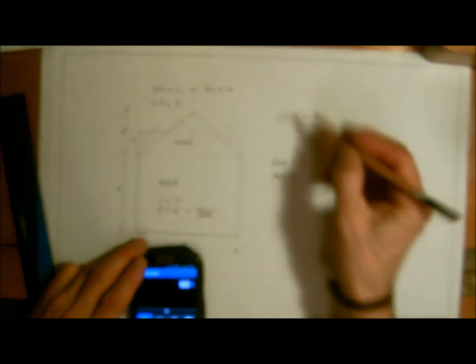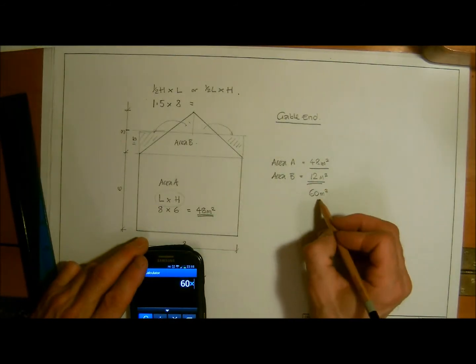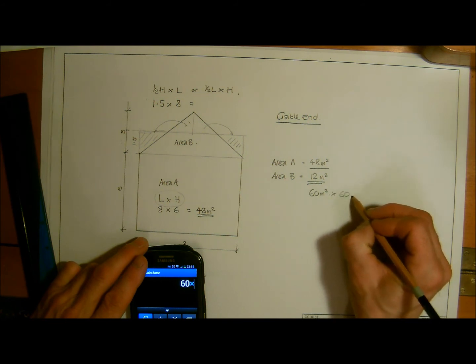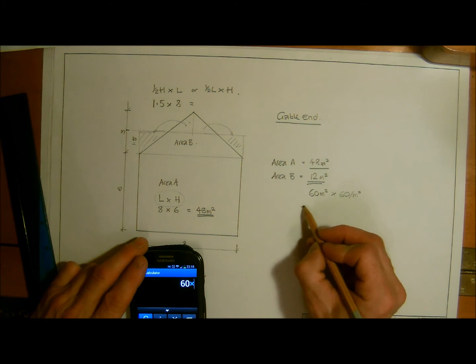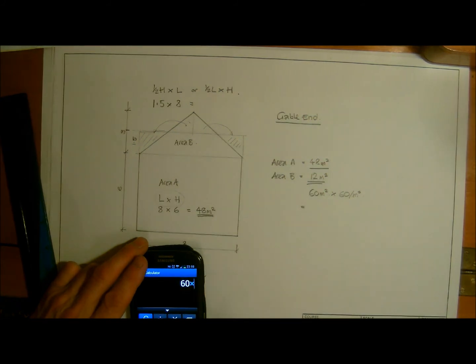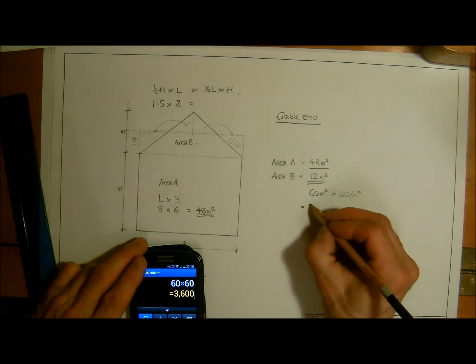Multiplied by stretcher bond we said at the start, so we're going to be multiplying that by 60 for 60 bricks per meter squared. So we've got 60 times 60, that's going to be 3,600 bricks.